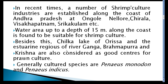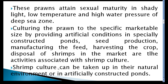These areas are considered to be good centers for prawn culture. The mostly cultured species are Penaeus monodon and Penaeus indicus. Prawns attain sexual maturity in shady light, with specific requirements of light, temperature, and water pressure in the deep sea zone. Prawns are then reared to marketable size under artificial conditions.